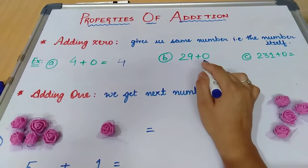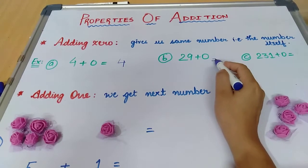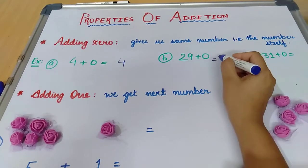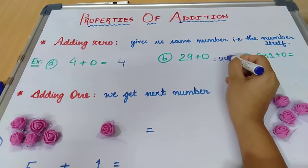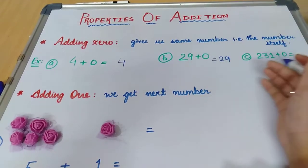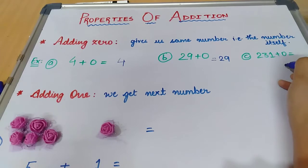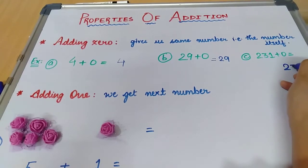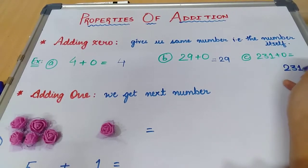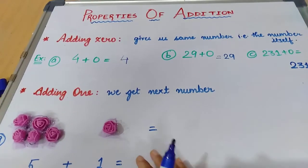Twenty nine milega. Zero matlab us mein kuch bhi nahi add hua hai. Like two thirty one, if I talk about three digit number, toh bhale three digit ka number ho, zero add kiya hai, so we will get two thirty one, that is the number itself. So now let us see what happens when we add one.